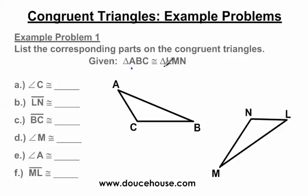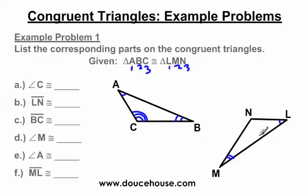I always look at the letter order. A comes first and L comes first, so these two vertices and angles are going to be congruent to each other — I'm going to put one tick mark to indicate these angles are equal. Since B comes second and M comes second, angle B is congruent to angle M. And C comes third and so does N, so C is congruent to angle N. The ordering of the letters tells you which angles are congruent. For example, I could not say A and M are congruent because they don't come in the same order.